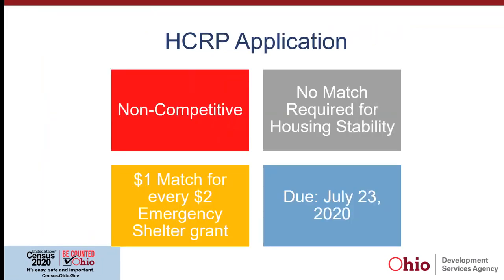The good news, as Scott already said, is that it's non-competitive and it's going to be a very streamlined application with fewer questions. There's still a required match for emergency shelter; there's no match for housing stability as usual. The due date is July 23rd, 2020. Amy Bullard is next.